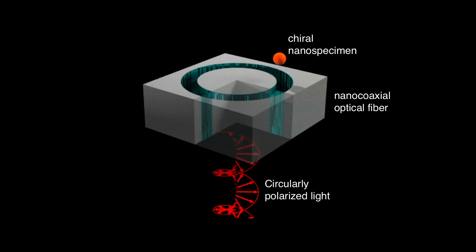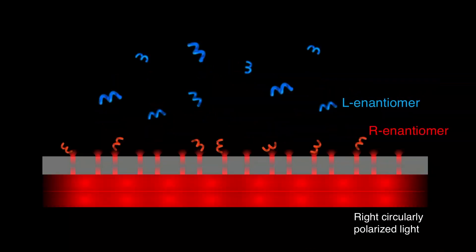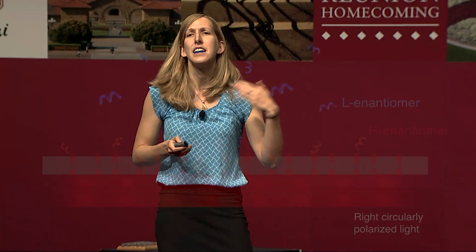We do so by using what I call a nano-coaxial optical fiber — a lot like the coax you would plug into the back of your cable TV. It has a metallic core, a metallic cladding, and a dielectric ring; in this case that ring is just air or water, with our chiral molecules above it. If we have an array of these nano-coaxial optical fibers and illuminate it with circularly polarized light, the right-handed enantiomer would be pulled toward right circularly polarized light passing through that air or water channel, enabling physical separation. Each coax acts to shrink the wavelength of light without changing its energy by exciting something called surface plasmons.